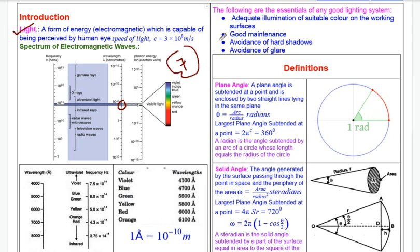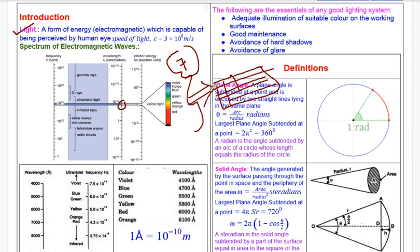The 7 colors are: violet, indigo, blue, green, yellow, orange, and red. When all colors combine, we see white light. If a body absorbs all colors and reflects none, it is called black. A body that reflects all colors is white.